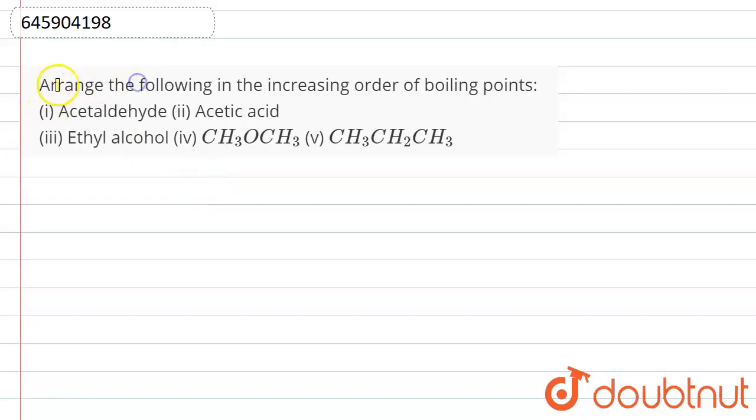Arrange the following in the increasing order of boiling point. So we have given this compound - acetaldehyde. What is acetaldehyde? Acetaldehyde is basically CH3CHO, this is the first compound. Second is acetic acid, which is basically CH3COOH.